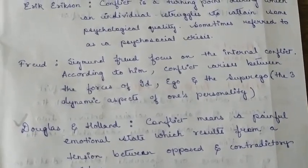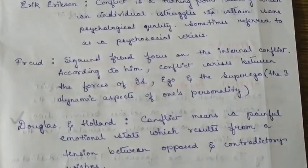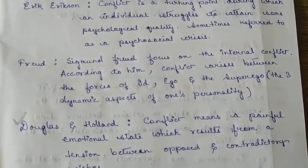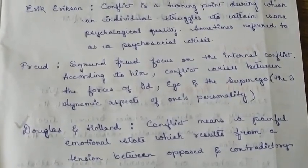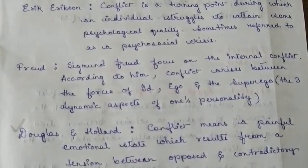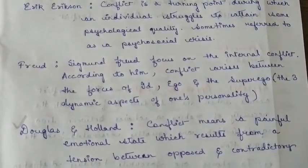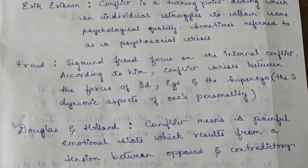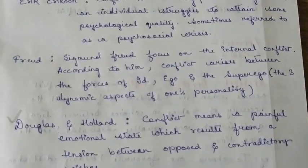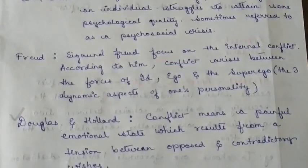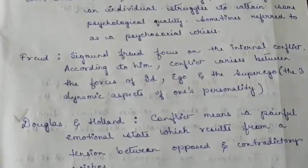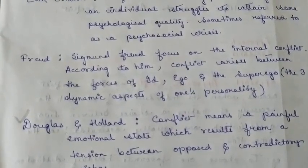Sigmund Freud stated that conflict arises between the forces of id, ego, and superego — the three dynamic aspects of one's personality. Freud focuses on internal conflict, that is, conflict that occurs within the person. This internal conflict is due to the id and superego, which operate on different principles. The ego becomes the mediator in order to resolve the conflict between id and superego.